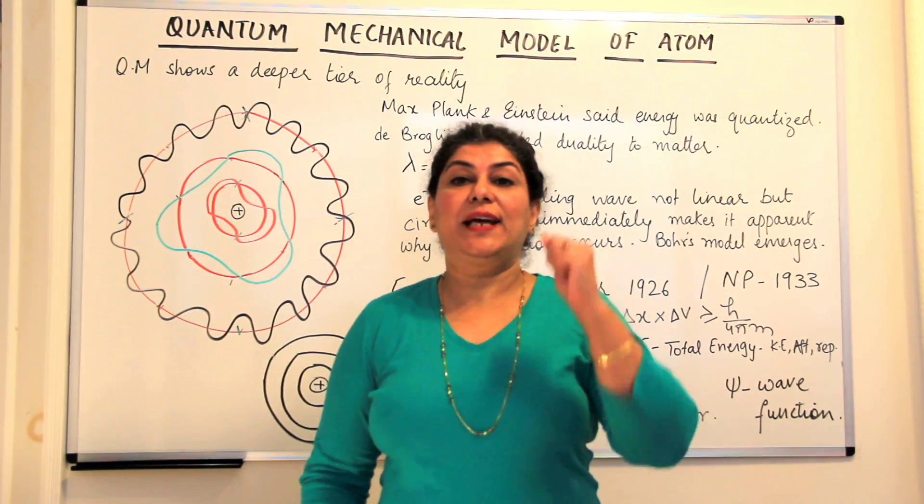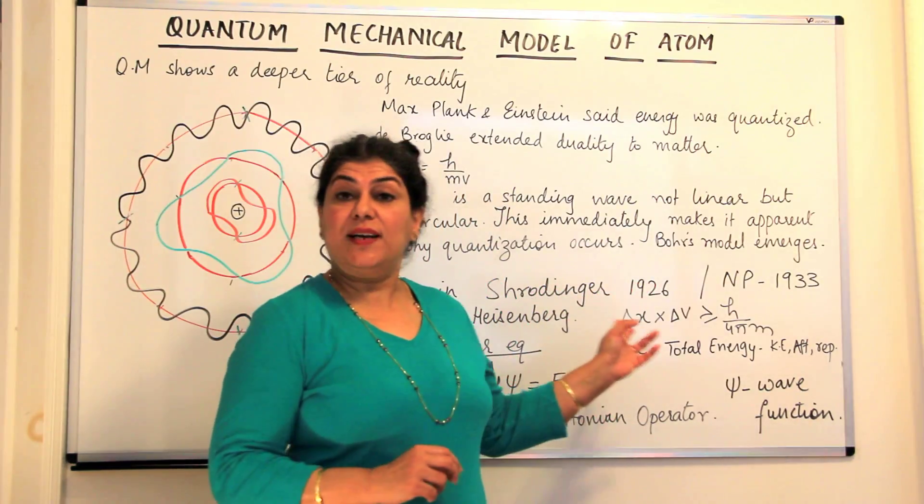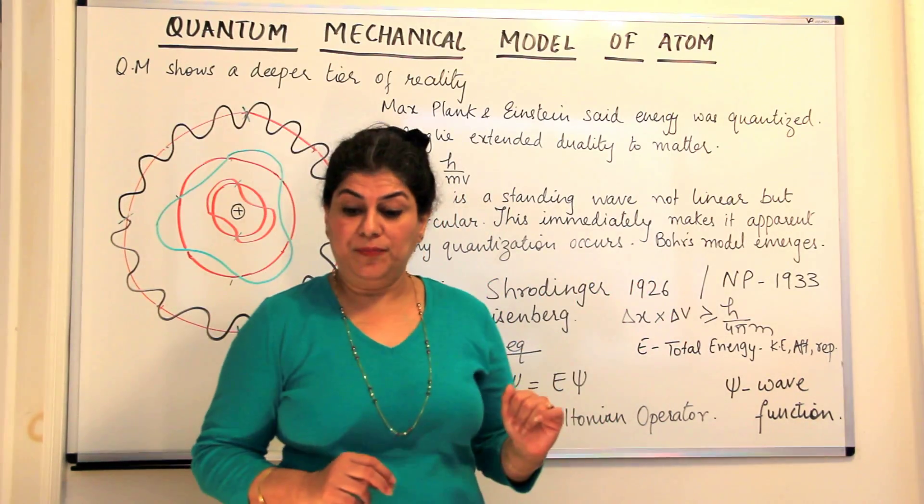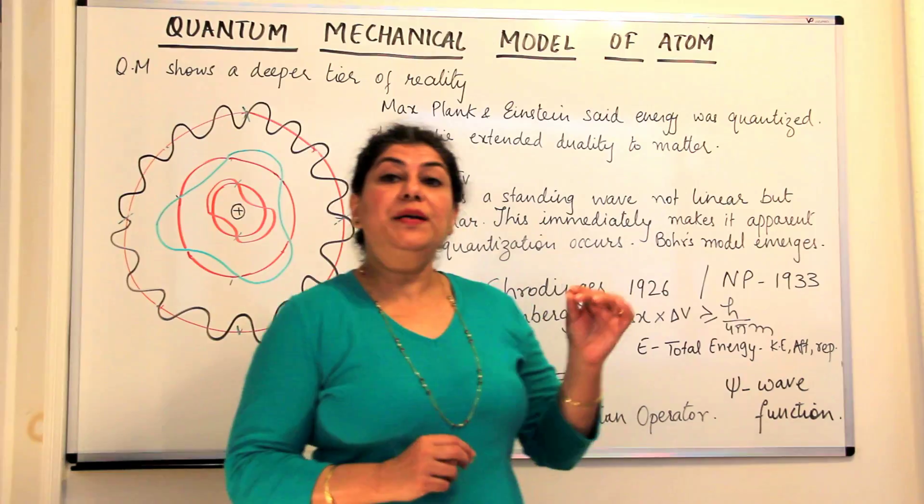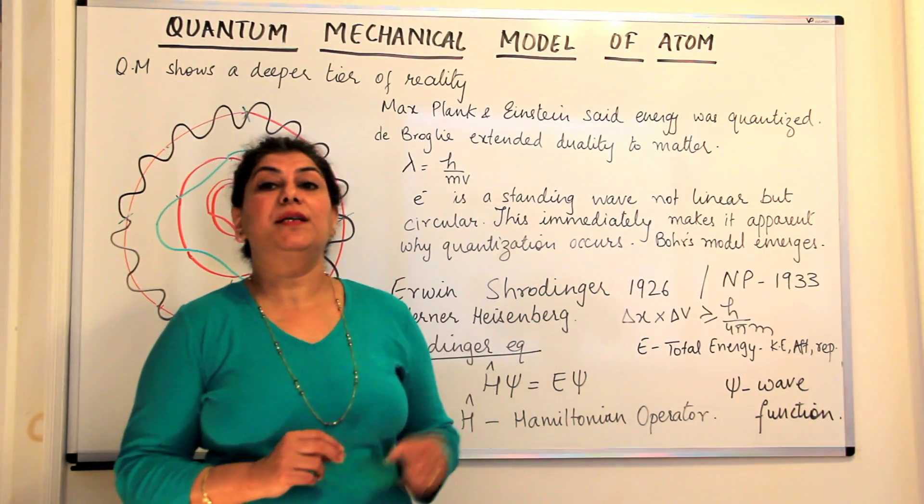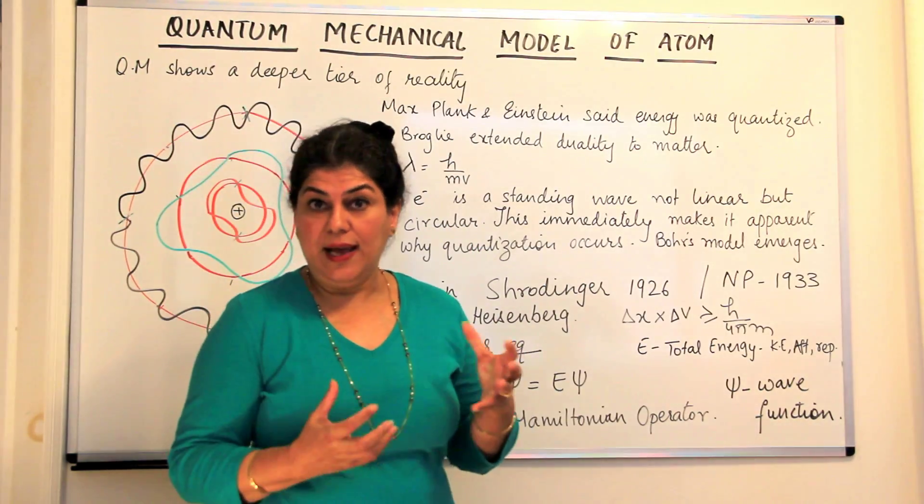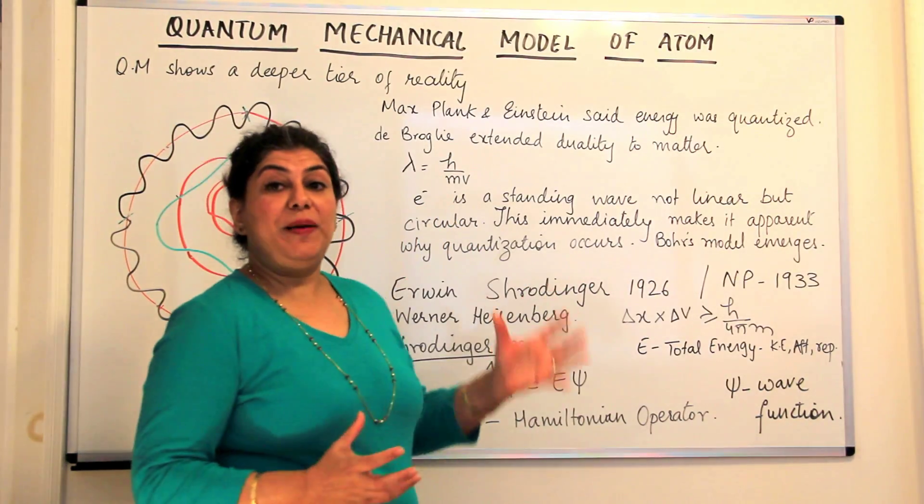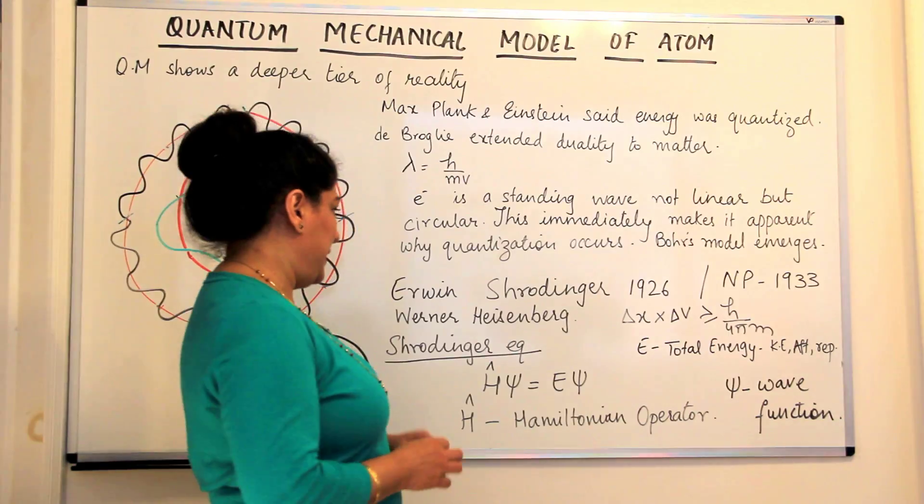Now there were two scientists, one we have already studied about, that was Heisenberg, Werner Heisenberg, and Erwin Schrödinger. They were working simultaneously to explain the quantization of an atom and to explain the quantum mechanical model of an atom.